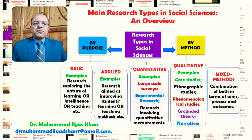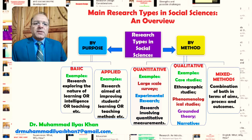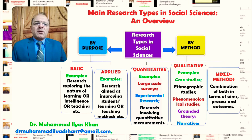Examples of quantitative studies include large-scale surveys collecting data through questionnaires, checklists, and observations. Experimental research also generally involves the quantification of social phenomena. Research that involves quantitative measures of social phenomena is considered quantitative research.